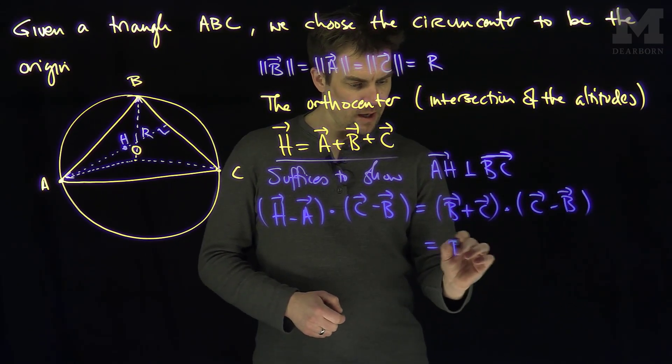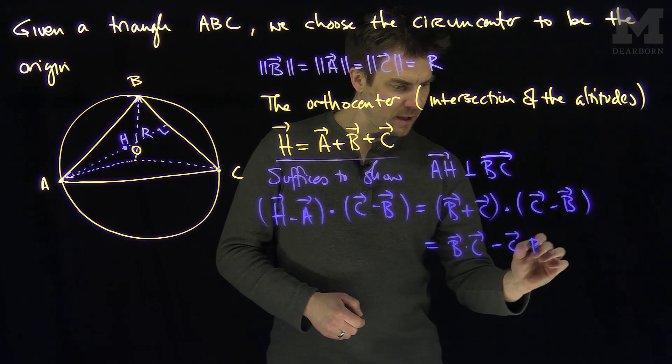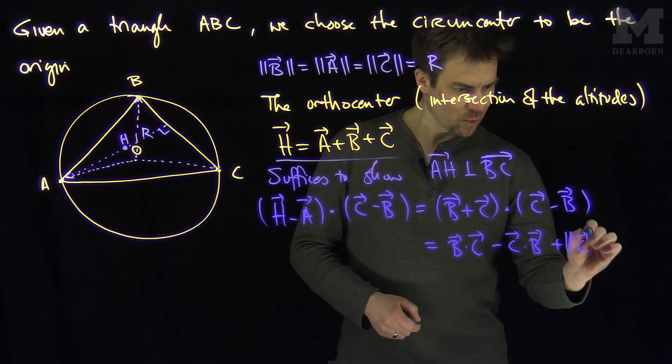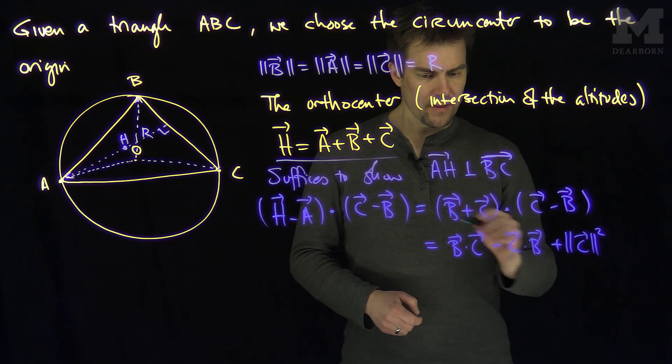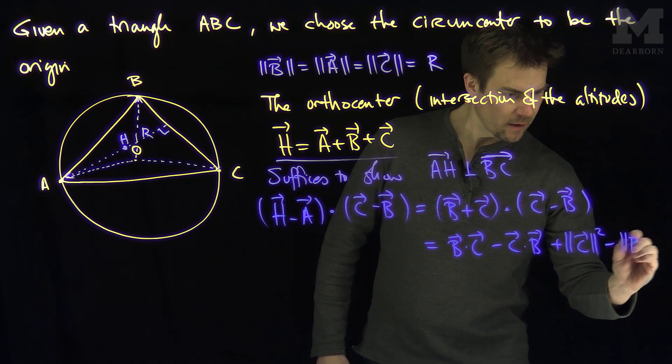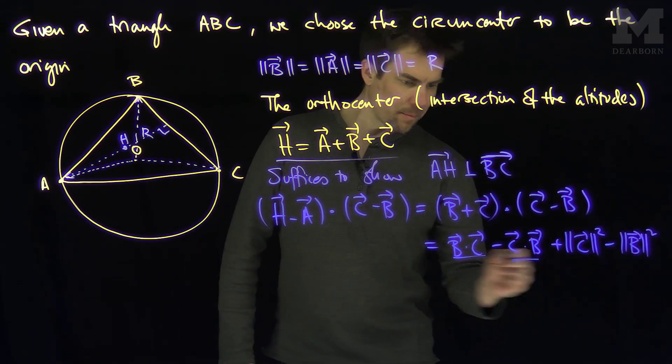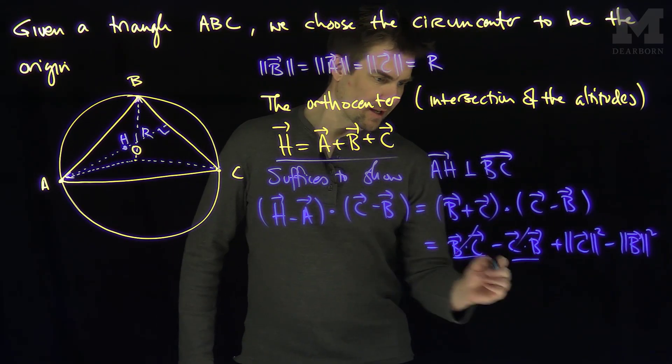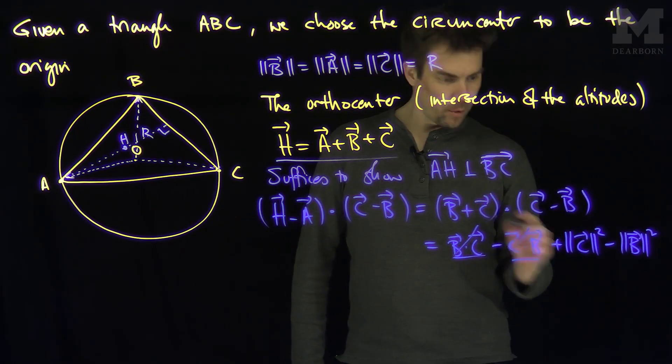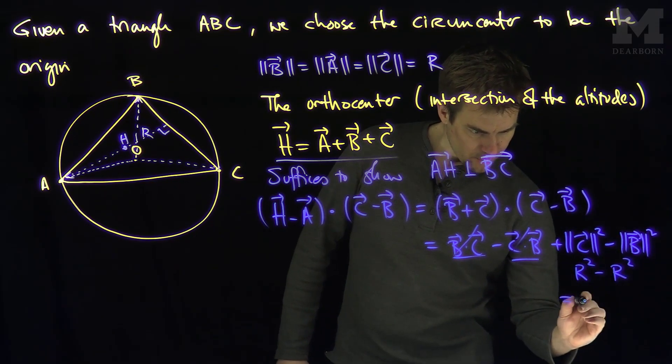So what this will be is B dot C minus C dot B plus the length of C squared, which is just C dot C, and then minus the length of B squared. Now, B dot C and C dot B are the same, so those are going to cancel out, and the length of C and the length of B are both equal to R. So this is R squared minus R squared, and that's equal to zero.